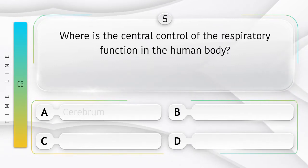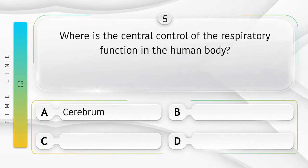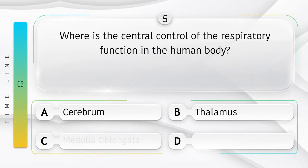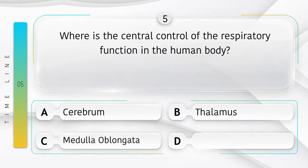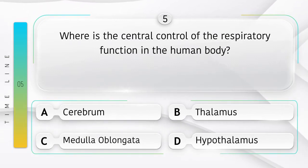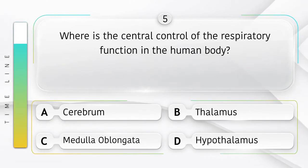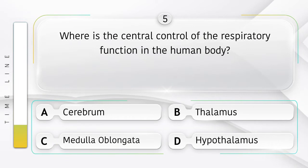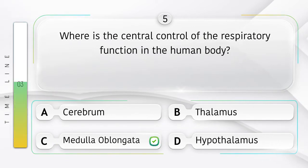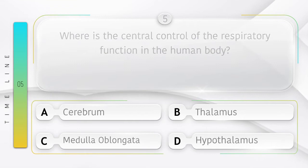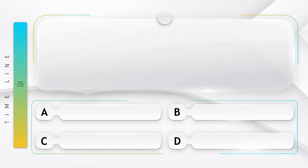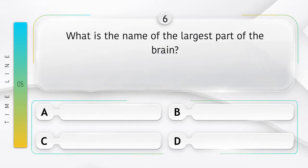Where is the central control of the respiratory function in the human body? Option A: cerebrum, B: thalamus, C: medulla oblongata, D: hypothalamus. Answer is option C: medulla oblongata.